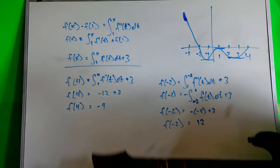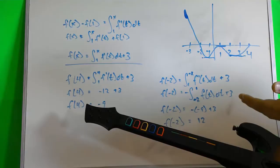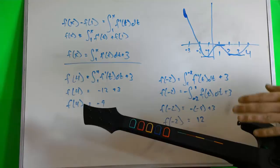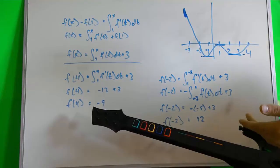So, to find f of 4, it's simply just plug 4 in for x. And from the given, from the initial problem, you know that the integral from 1 to 4 is 12. But since it tells you it the other way, you have to make it negative. So, you get negative 12 plus 3 equals negative 9.